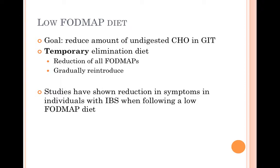The overall goal of a low FODMAP diet is to reduce the amount of undigested short-chain carbohydrates in the GI tract. This is a temporary elimination diet that reduces FODMAPs and then gradually reintroduces them to identify personal triggers. Multiple studies have shown a reduction in symptoms in individuals with IBS when following a low FODMAP diet.